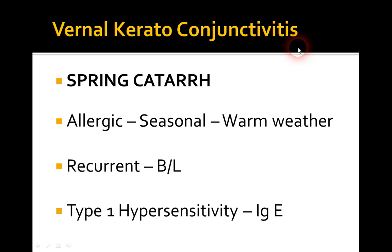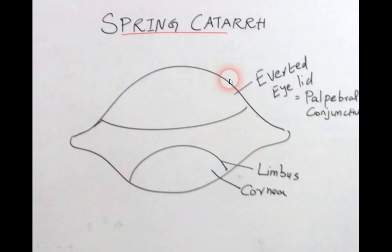Now we move to the topics proper. Vernal keratoconjunctivitis is an allergic reaction, also called spring catarh. It is a seasonal disease, commonly seen in children during summer dry climates. It is a recurrent, bilateral condition and a type 1 hypersensitivity reaction — IgE mediated.